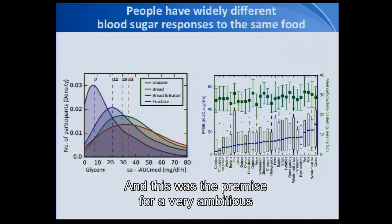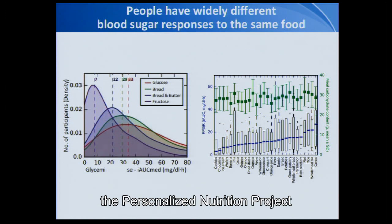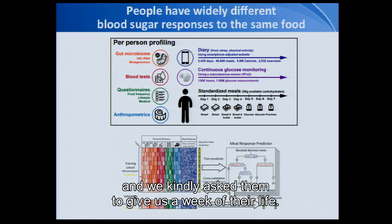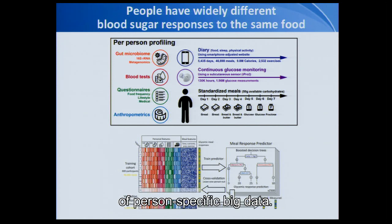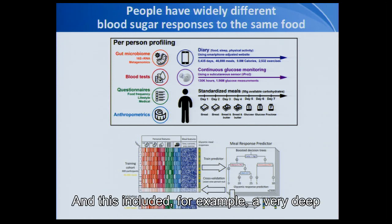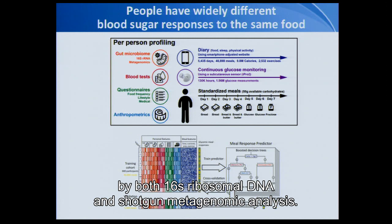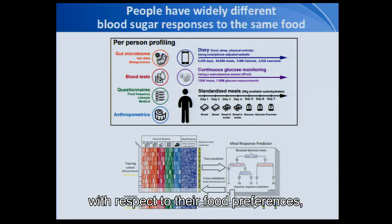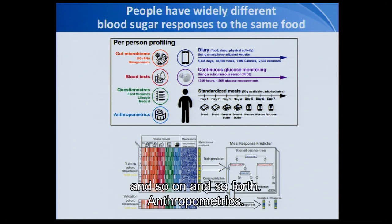This was the premise for a very ambitious, large-scale project, which we termed the Personalized Nutrition Project, in which we took these 1,000 individuals and kindly asked them to give us a week of their life. During this week, we collected an unprecedented amount of person-specific big data. This included a very deep characterization of the gut microbiome by both 16S ribosomal DNA and shotgun metagenomic analyses, many blood tests, many questionnaires that these people filled in with respect to their food preferences, background medical illnesses, and medications.